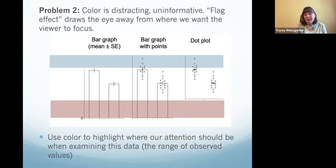After removing irrelevant labels, the next problem was that the use of color was uninformative. Color is a pre-attentive attribute — our eyes pay attention to it whether we want them to or not. In this case, color was creating a flag effect, drawing the eye away from where I want the reader to focus. I needed to use color to highlight where attention should be — on the range of observed values. So I eliminated the extra color, keeping only one color highlighting that range, with a label showing what it is.